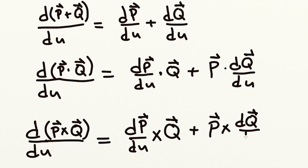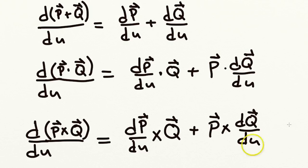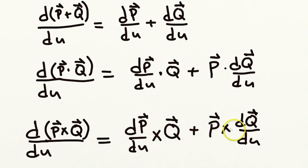One place you have to be careful when applying this last rule is keeping the order intact. Because when taking the cross product of two vectors, the order matters — if you reverse the order, you'll get a negative sign. So it's important to keep this order: P cross Q. You always take the derivative of P first, cross it with Q, plus P crossed with the derivative of Q. Of course, in the other cases the order doesn't matter, but to keep good habits, always use the same order.